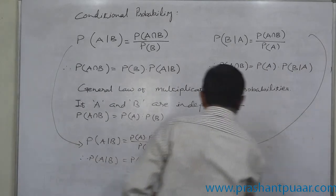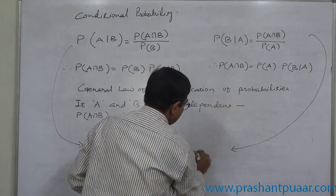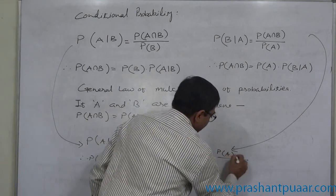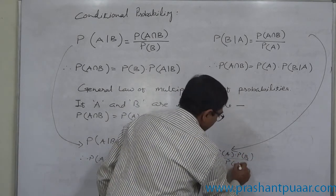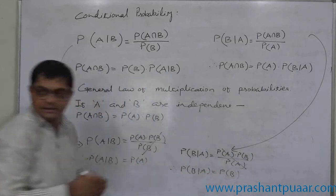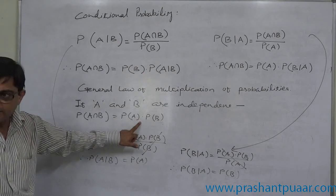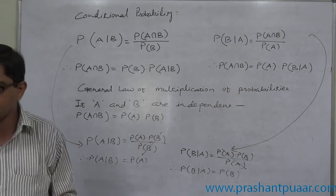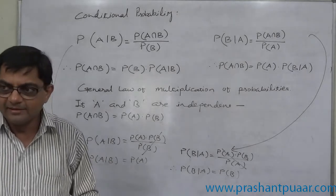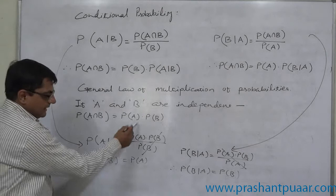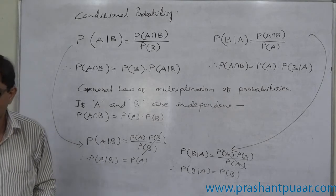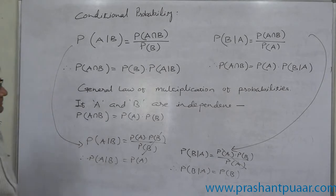Similarly, P of B given A equals P of A into P of B divided by P of A, and these two cancel, meaning P of B given A equals P of B. In other words, if A and B are two independent events, there is nothing like a conditional event or conditional probability, because if A and B are independent then they cannot be conditional. This is known as the special law of multiplication of probabilities.